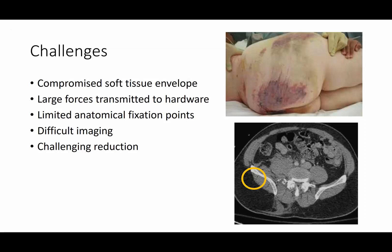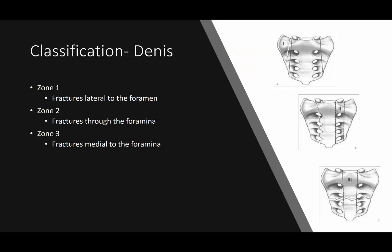Some of the challenges with sacral fractures include the fact that you're dealing with often a very compromised soft tissue envelope. You have large forces transmitted to the hardware that are fixed at very limited anatomic fixation points and then surrounded by very thin soft tissues. The imaging can be very difficult intraoperatively as well as preoperatively — you need good CT scanning and a lot of adjunctive techniques done intraoperatively to see what you're doing. The reductions can not only be challenging, but they're somewhat unfamiliar, as these are not techniques employed on a very frequent basis.